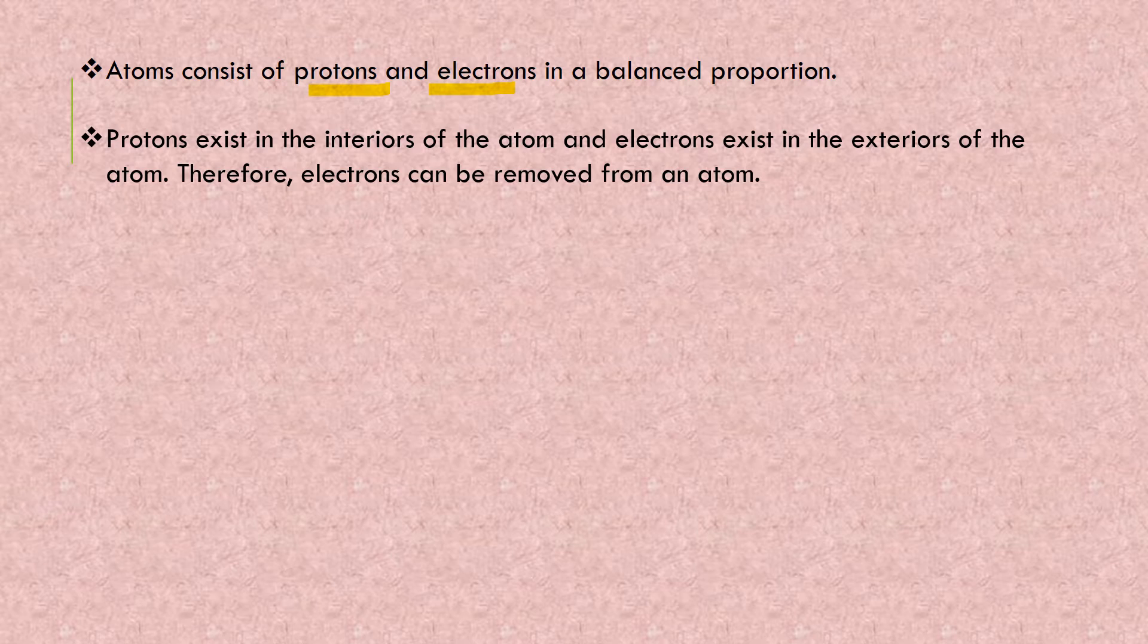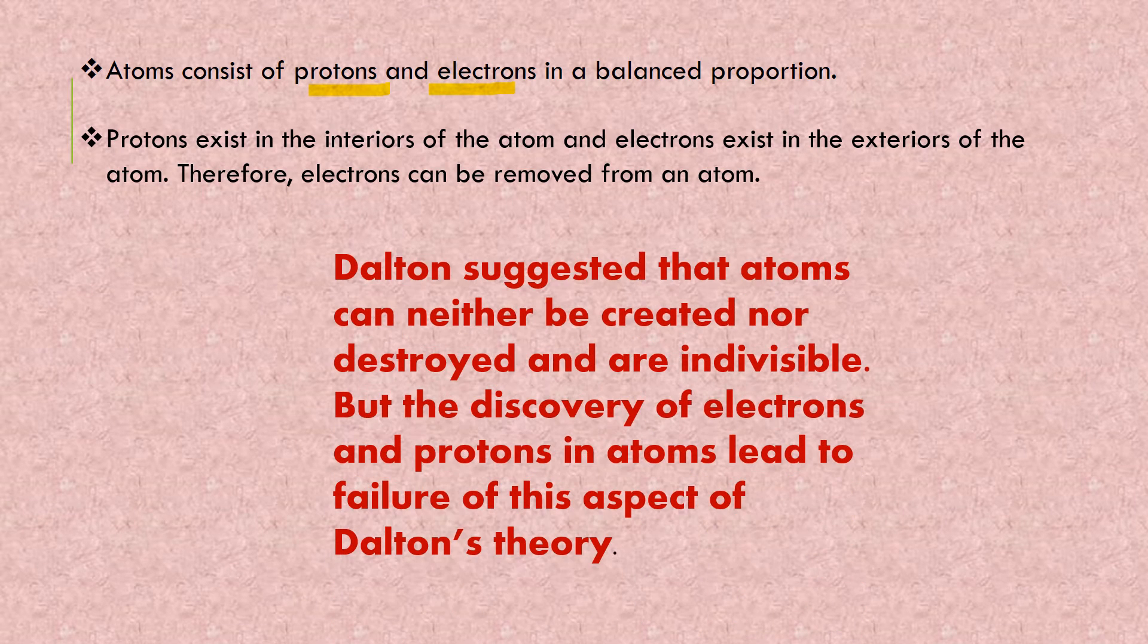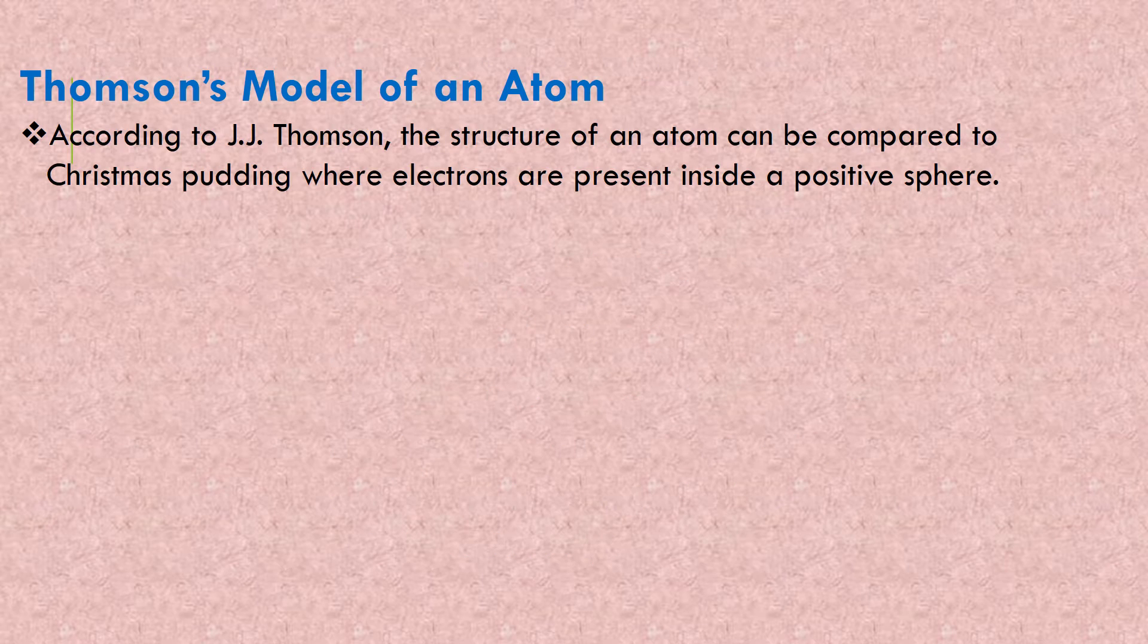In the nucleus, the protons and neutrons are there. Surrounding, there are orbits in which electrons are present. This shows that Dalton's postulations were not up to the mark. Dalton suggested that atoms cannot be created nor destroyed and are indivisible, but the discovery of electrons and protons in atoms led to the failure of this aspect of Dalton's theory.